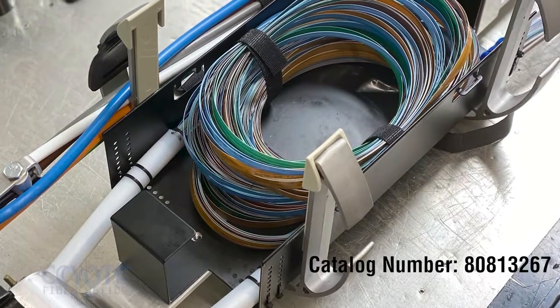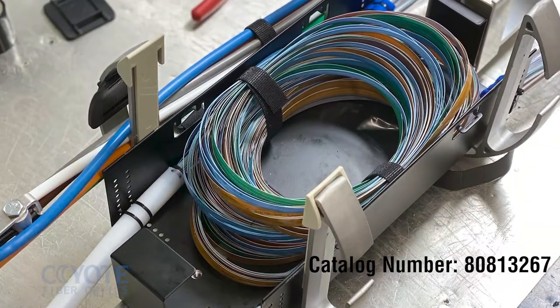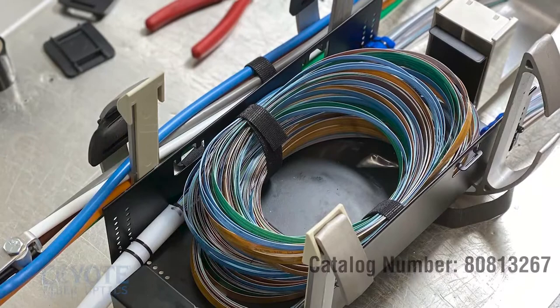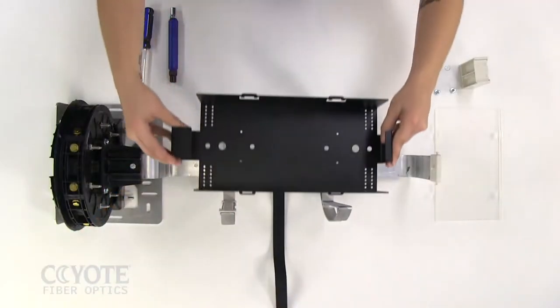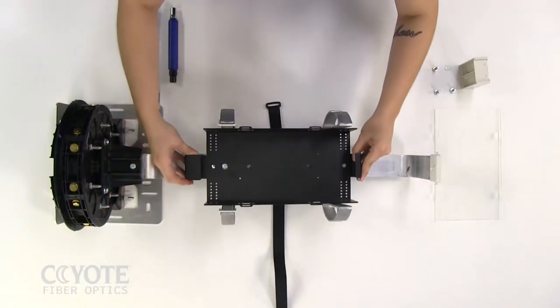A deep metal slack basket can be installed to provide storage of 864 expressed ribbon fibers. Place the deep metal slack basket onto the organizer bar.